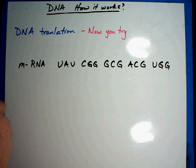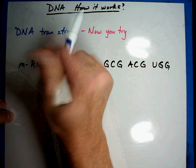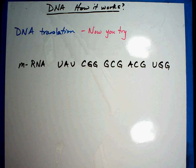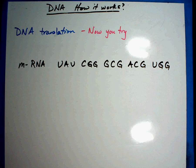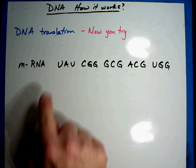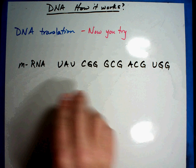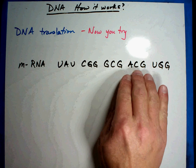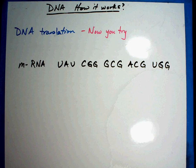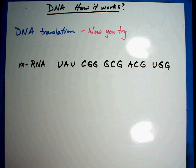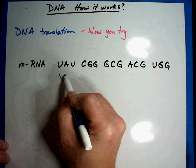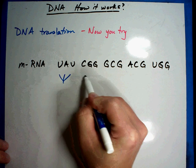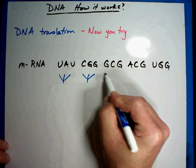Now it's your turn to do DNA translation. Remember there are a couple of steps you're going to have to do. On the screen you will see a piece of messenger RNA. Remember, this is the secret code. It's going to read everything in threes. So you're going to read everything in groups of three. What I want you to do first is put the groups of three together, making your transfer RNAs.